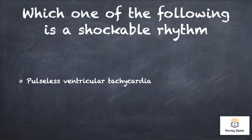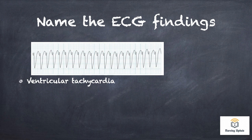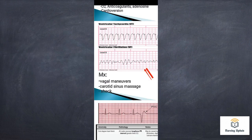Which one of the following is a shockable rhythm? The answer is pulseless ventricular tachycardia. Some people say ventricular fibrillation — both pulseless ventricular tachycardia and ventricular fibrillation are shockable rhythms. In the ECG, the ventricular tachycardia waveform is identified, and the management includes a shock.